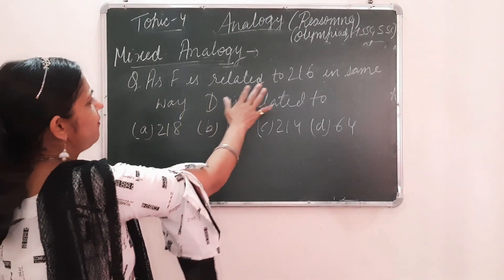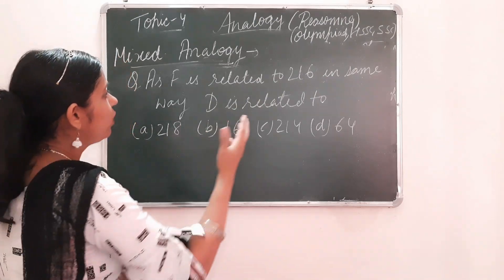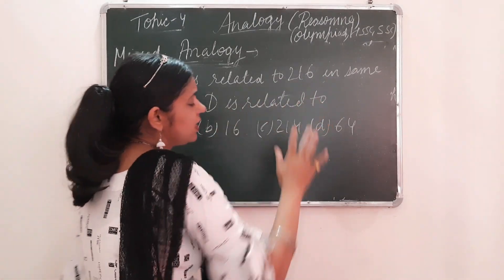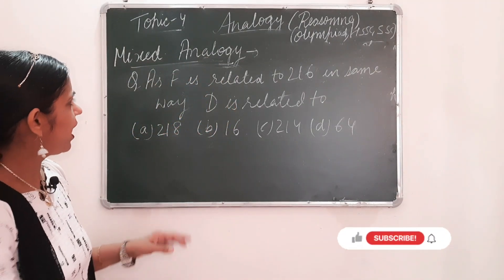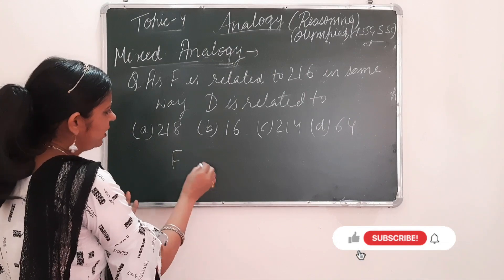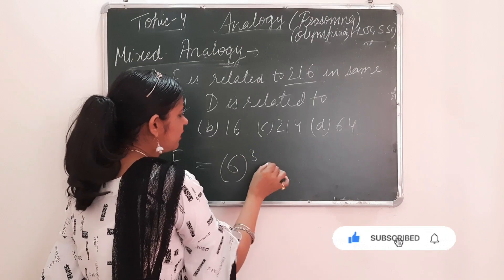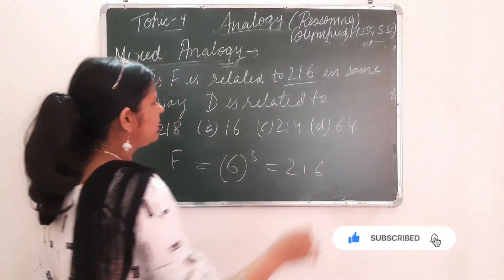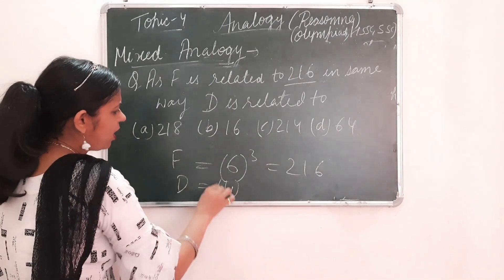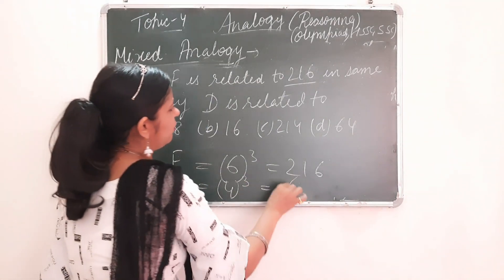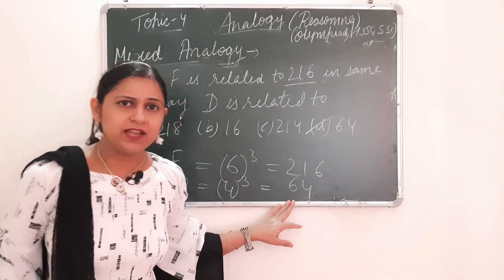Another type: F is related to 216, in the same way D is related to what? F's position is 6, and 6 cubed is 216. D's position is 4, so we calculate 4 cubed: 4×4=16, 16×4=64. The correct option is 64.